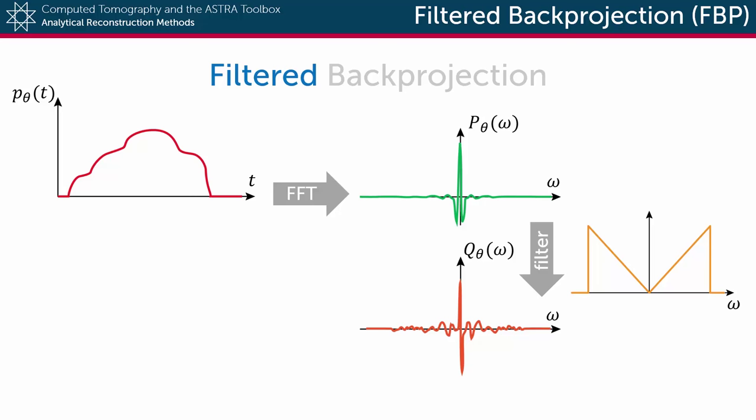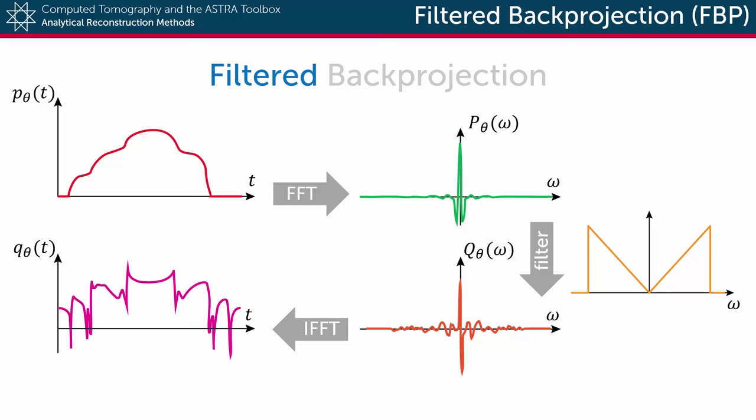The resulting spectrum is then filtered by multiplying it with what is called a RAM-Lac filter. You can clearly see that by doing so, the low frequencies are somewhat suppressed, and the high frequencies gain relative importance. Also note that at some point there is a cutoff, and all frequencies higher than that are set to zero. This is to reduce noise in the reconstructed image. After this filtering, the spectrum is inverse Fourier transformed, resulting in a new detector function, which we'll call Q.